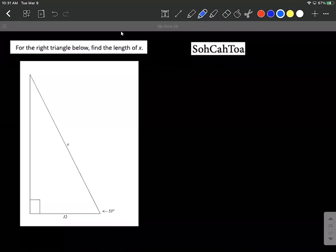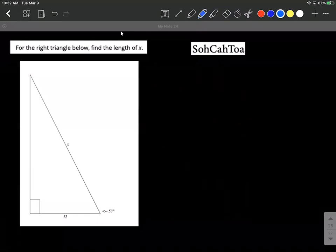On this problem we have a right triangle given to us. We know an angle, a side length, and we're looking for the hypotenuse based on this information.